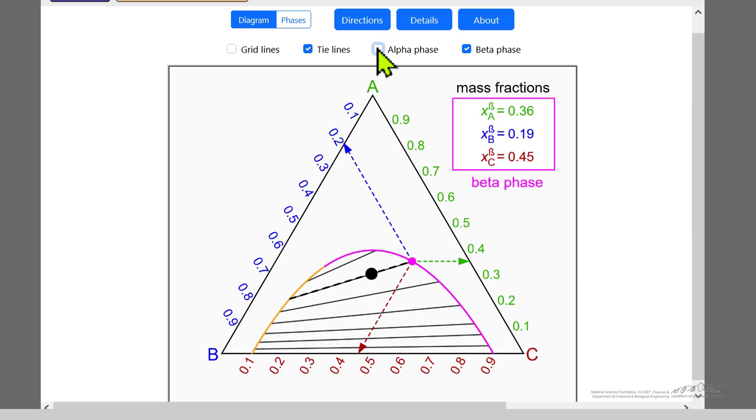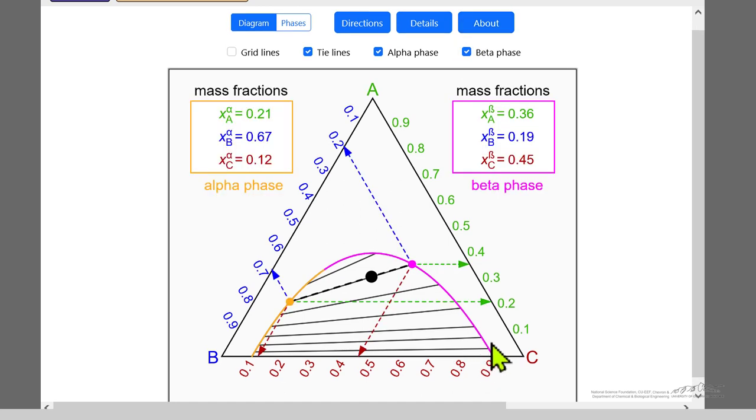I can remove the composition of the alpha phase if you want to test yourself as to what the composition is, or the beta phase, to make sure you understand this diagram. The purple line corresponds to the beta phase and the orange line, the alpha phase.